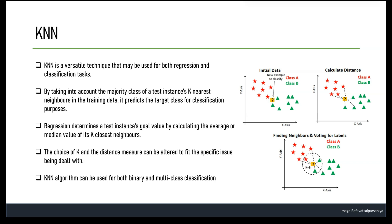For regression, the KNN algorithm predicts the target value of a test instance based on the average or median value of its K nearest neighbors. For example, given a dataset of houses with features like square footage and number of bedrooms, KNN finds the K nearest neighbors of the new house and calculates the average or median price to predict the new house's price.